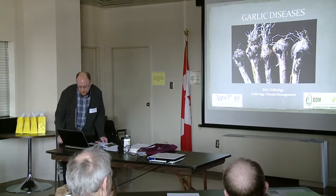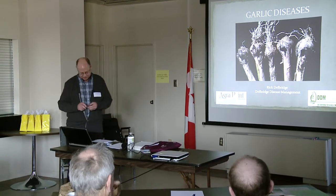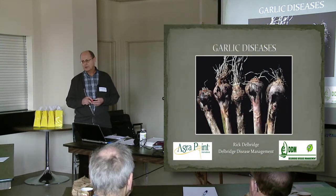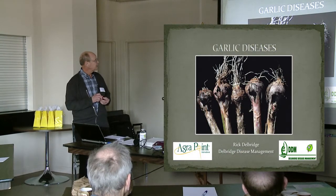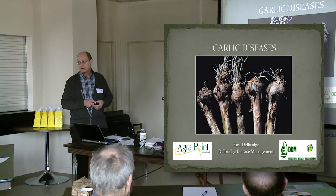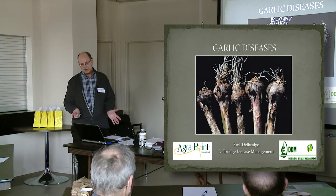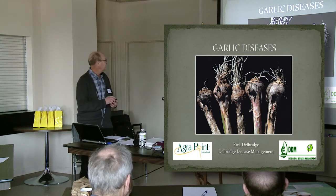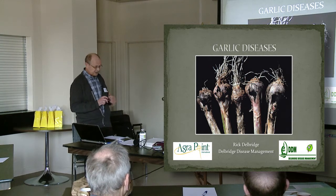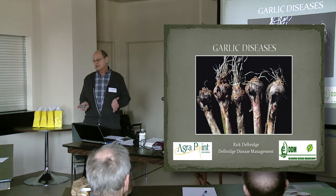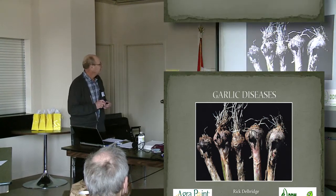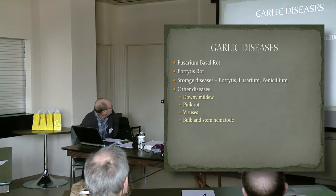Now I'm going to talk about other garlic diseases. Perhaps the next one in importance to white rot is this one — called Petratus rot. It's a very common disease of not only onion but especially garlic. As you can see here, it takes over the whole plant much the way white rot does, but it doesn't persist in soils for lengthy periods of time, which is a good thing about it.